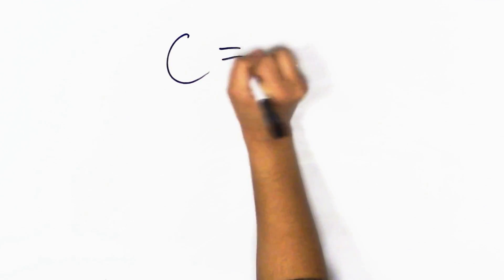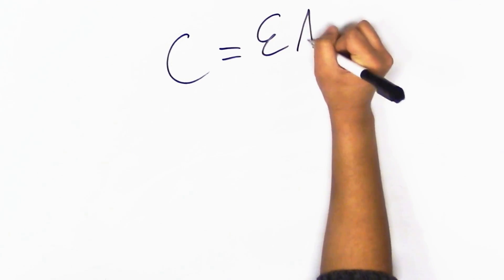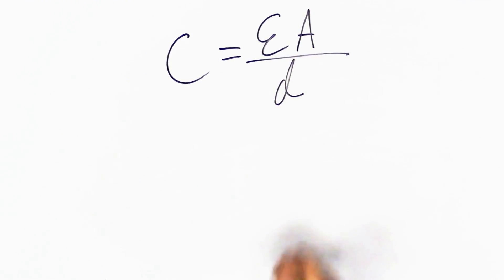Capacitance is the amount of charge that something can hold. The capacitance of a parallel plate capacitor is modeled by this equation: C equals epsilon A over D.